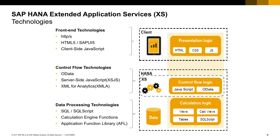On top of it, we have a very lightweight layer called the control flow layer. This control flow layer exposes the database as a set of web services, based on OData protocol or XSJS server-side JavaScript. And the client side is also a lightweight layer, based entirely on HTML, CSS and JavaScript — web-based interfaces that are elegant, intuitive, easy to access from any device and, of course, platform independent.